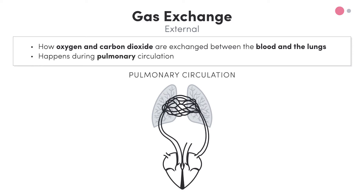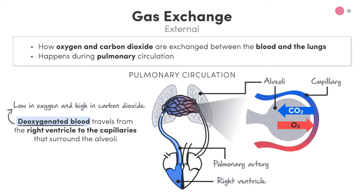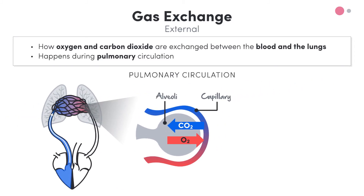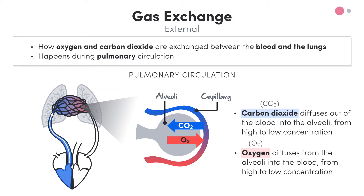External gas exchange happens during pulmonary circulation. Pulmonary circulation transports blood to and from the lungs. Deoxygenated blood, which is low in oxygen and higher in carbon dioxide, travels from the right ventricle to the capillaries that surround the alveoli. This is where external gas exchange occurs: carbon dioxide diffuses out of the blood to the alveoli from high to low concentration, as there's a higher concentration of CO2 in the blood compared to fresh air, whilst oxygen moves from the alveoli into the blood, again from an area of high to low concentration to achieve balance.